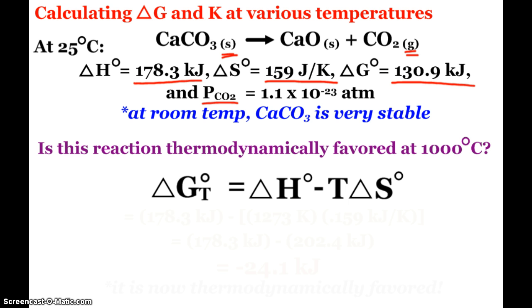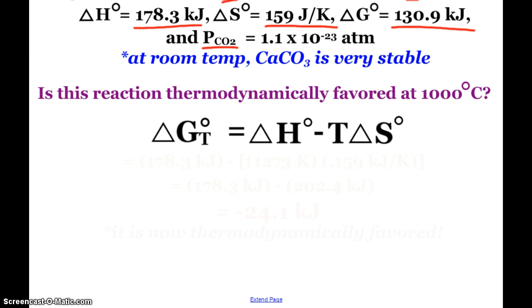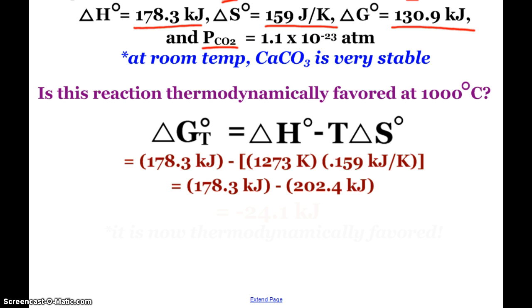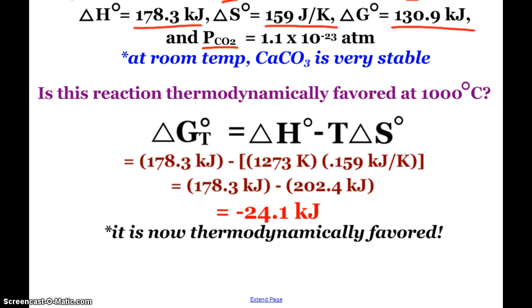Now, is this reaction thermodynamically favored at a thousand degrees Celsius? Well, here we can calculate our delta G at this temperature. We take our delta H minus T delta S. And so when we plug in our numbers and making sure that the delta H is in kilojoules as well as the delta S, we end up seeing that now this reaction is thermodynamically favored.